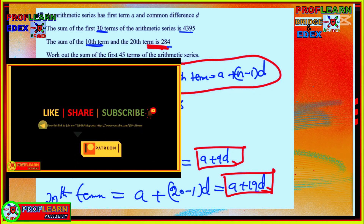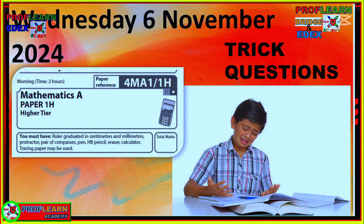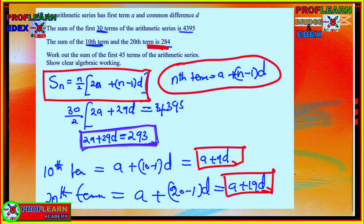The information provided is that the series has first term a and common difference d. When this student saw the question he literally cried, not realising that the sum of n terms and the nth term of an arithmetic series are given by standard formulas. You are told the sum of the first 30 terms equals 4395, so: 30/2 × (2a + 29d) = 4395, which simplifies to the first equation: 2a + 29d = 293.